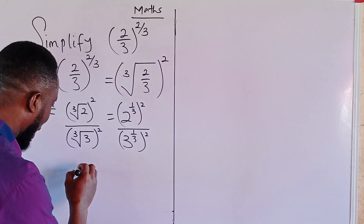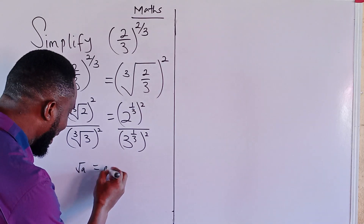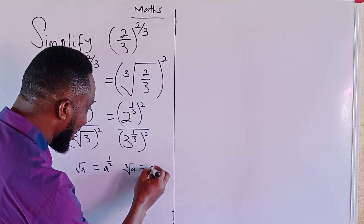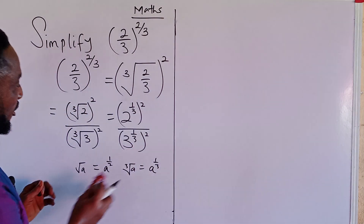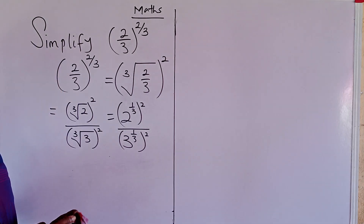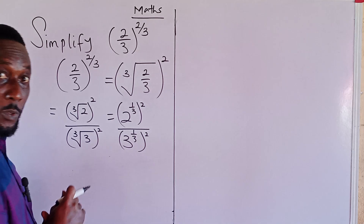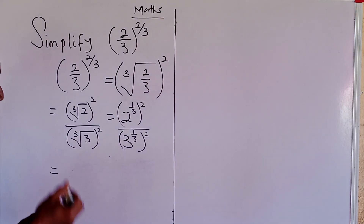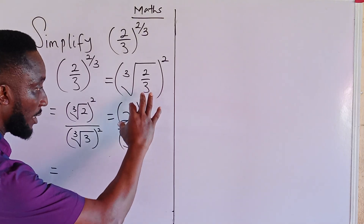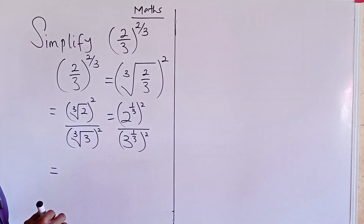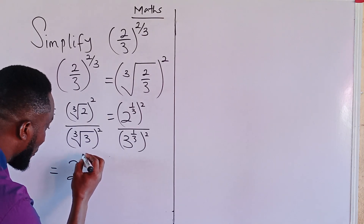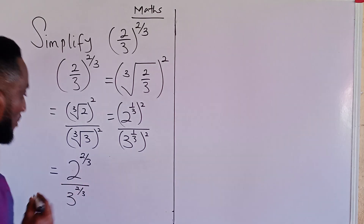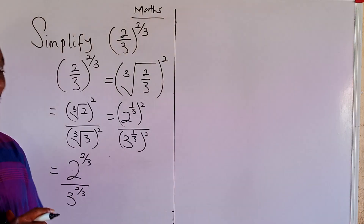Recall that the square root of a can be written as a to the power of one-half, and similarly the cube root of a can be written as a to the power of one-third. Applying the power rule of exponents — where an exponent raised to another exponent means we multiply the exponents — one-third times two gives two-thirds. So we have 2^(2/3) divided by 3^(2/3).